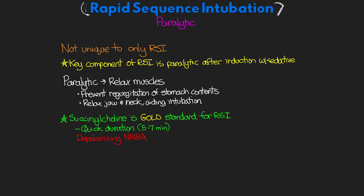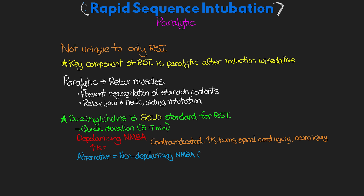Succinylcholine is a depolarizing neuromuscular blocking agent, so it can and will increase potassium levels in our patient. It's contraindicated in patients who have hyperkalemia and especially in burn patients, spinal cord injuries, and other neurological injuries. For those patients who cannot receive succinylcholine, we would use a non-depolarizing neuromuscular blocker such as vecuronium or rocuronium. These can be used but at higher doses to produce the rapid paralysis we're looking for.